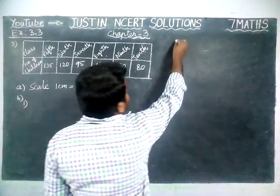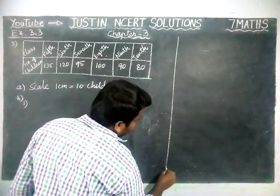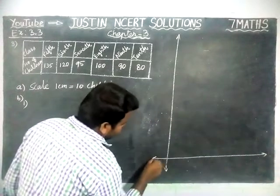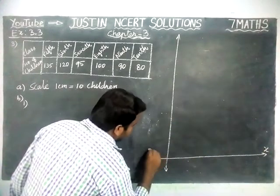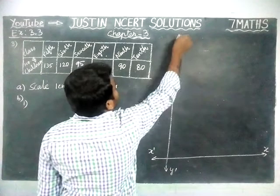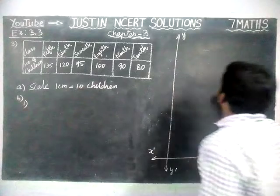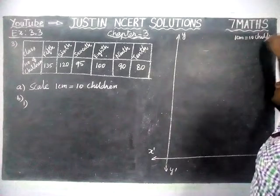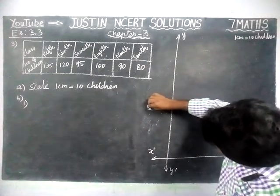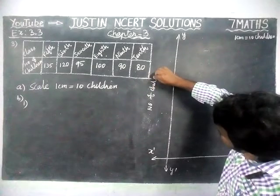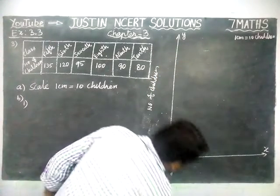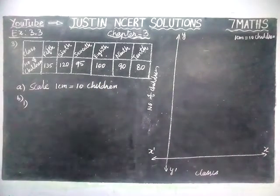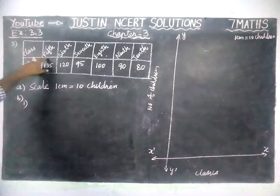Now we are going to draw the x-axis and y-axis. This is the y-axis we have taken. x-axis on the right-hand side is positive x, negative side is x-axis, and this is y-axis. Here we have taken scale: 1 cm is equal to 10 children. On the y-axis we have taken number of children, and we have students up to 135.